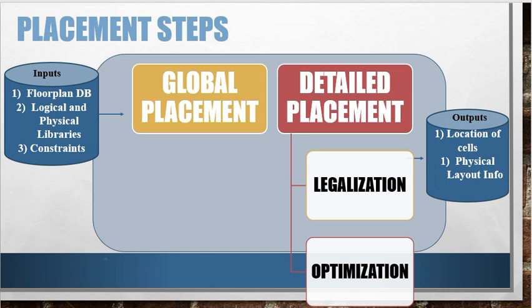Now let's see the placement steps in much more detail. So before starting placement, the tool needs certain inputs like floorplan DB. Floorplan DB will give us the info about pre-placed cells and also the power routing. And logical and physical libraries. Logical libraries will tell us the timing info of the standard cells, and physical libraries will tell us the physical info of standard cells like size of the standard cell. And constraints will give us the timing and design constraints which we have set, for example the uncertainty, the max fanout. Now once we have the proper inputs, the placement tool starts the placement in two steps. First it does the global placement, then it moves on to detailed placement. So once the placement is done, we have the final physical layout info which has the location of all the cells.